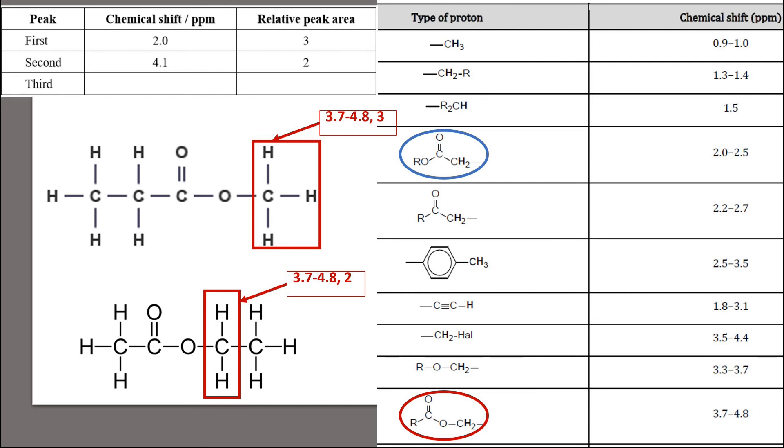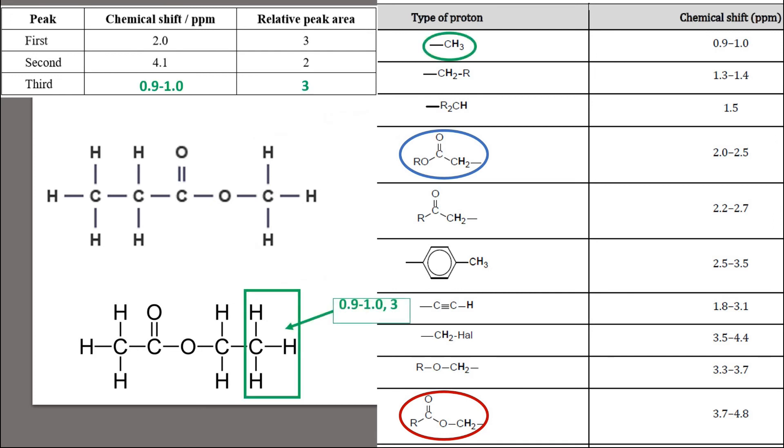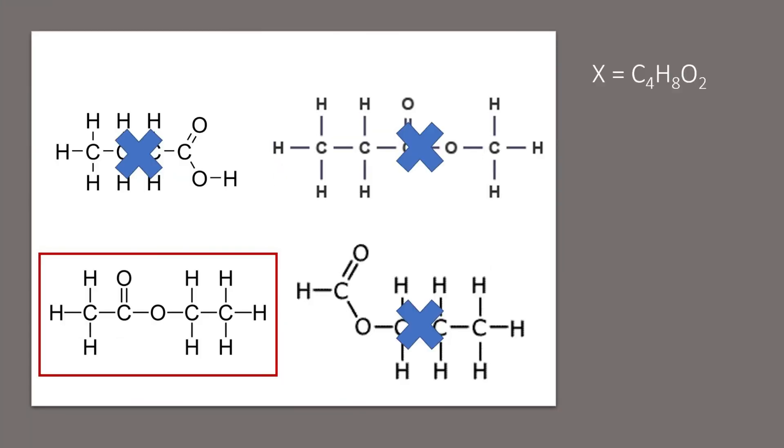And we expect the last peak to show up at 0.9 to 1 ppm, having a relative peak area of 3. Now to learn more about the terms downfield or shielded, upfield and deshielded, I have included a link in the description.